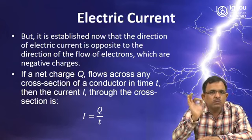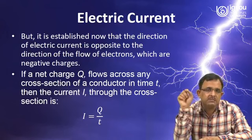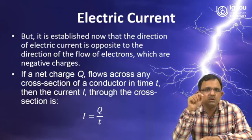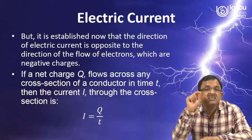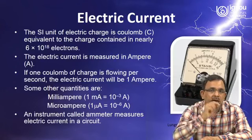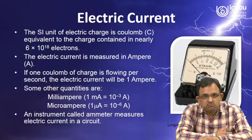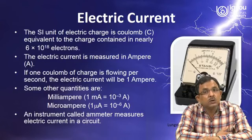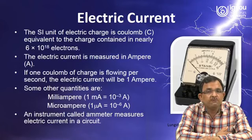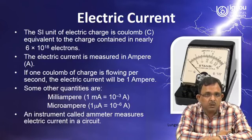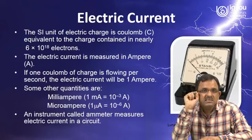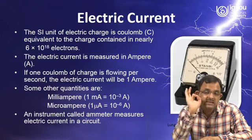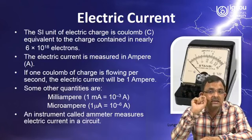If a net charge Q flows across any cross section of a conductor in time t, then the current is defined as I = Q/t — the charge flowing through a conductor per second. The electric charge is measured in coulombs, where 1 coulomb is equivalent to the flow of nearly 6.6 × 10¹⁸ electrons. So if 6 × 10¹⁸ electrons are flowing per second, that is 1 coulomb. Electric current is measured in amperes: if 1 coulomb of charge flows per second through a conductor, the electric current is 1 ampere.